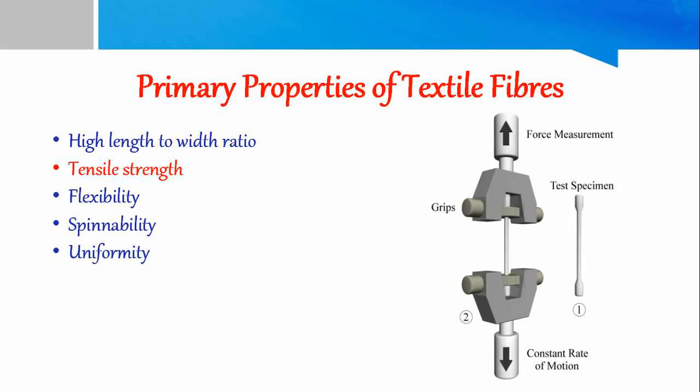Here in the image we can see that the fabric sample is fixed in both the clamps, in which one clamp is fixed and another moves. It works on the constant rate of speed. It is the fabric relationship between load and elongation of the fabric.